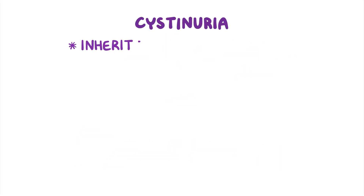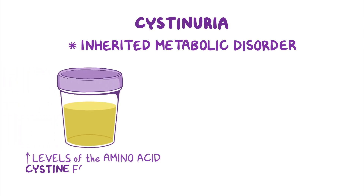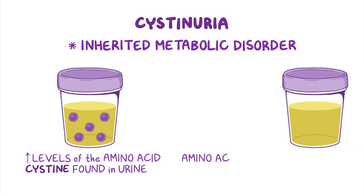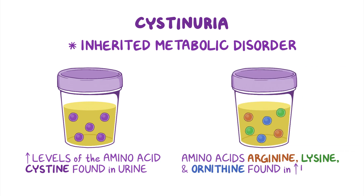Cystinuria is an inherited metabolic disorder named because of high levels of the amino acid cysteine found in urine. The chemically similar amino acids arginine, lysine, and ornithine are also found in high levels.